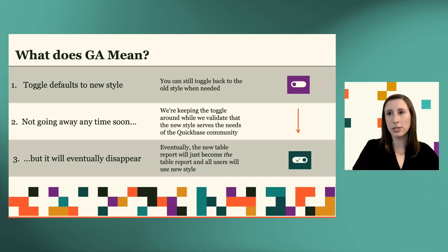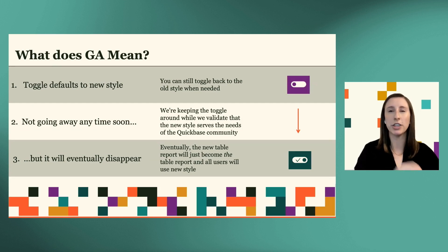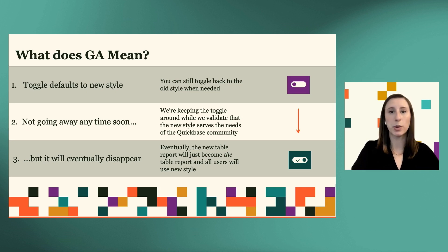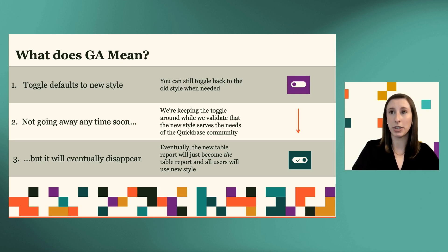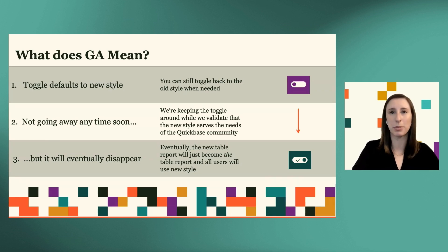Before I get into the features, I want to talk about what GA means for a feature like the table report, where you have a toggle to flip between old and new. In the simplest terms, GA means that the default will switch to the new experience, but you'll still be able to toggle off to use the old style if you need to. We'll be keeping the toggle around for quite a while while we validate that the new style serves the needs of the QuickBase community. We will eventually remove it and the new table report will just become the table report — the default and only experience — but that's not happening anytime soon.